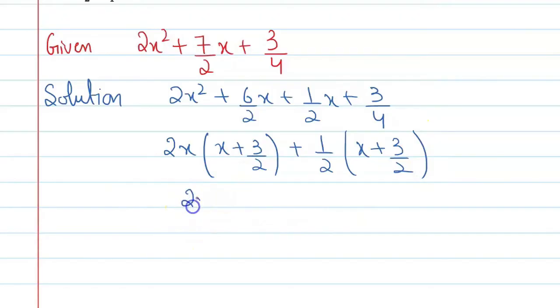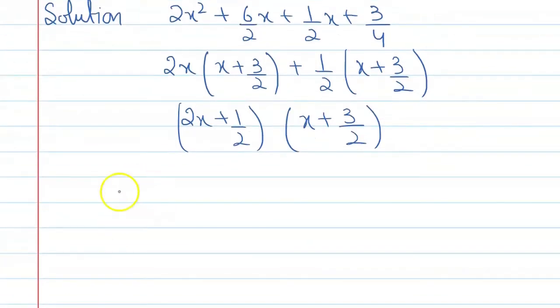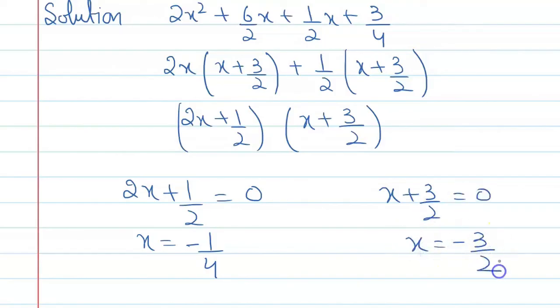Again this will become x plus 3 by 2. So here you have two linear factors. Number one is 2x plus 1 by 2, and the second is x plus 3 by 2. So x is equal to minus 3 by 2.